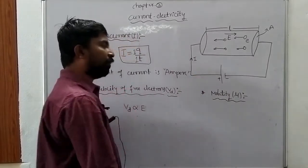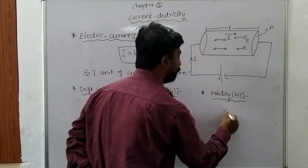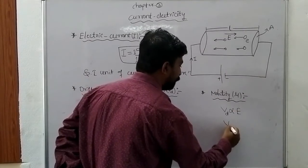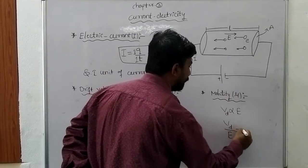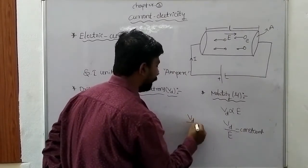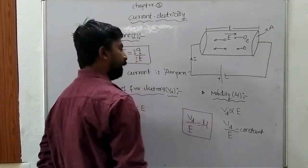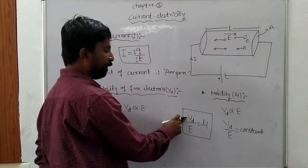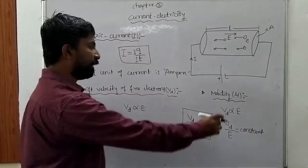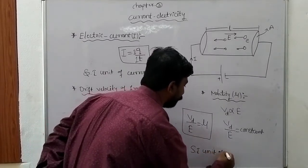The drift velocity of free electrons depends on the applied electric field and is directly proportional to it. Therefore VD is proportional to E. Removing the proportionality, VD equals a constant times E, so VD divided by E equals a constant, which we call mu (μ). Mobility is defined as the drift velocity of the free electrons per unit electric field, denoted by mu (μ).